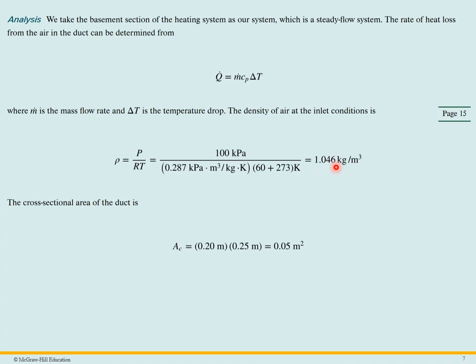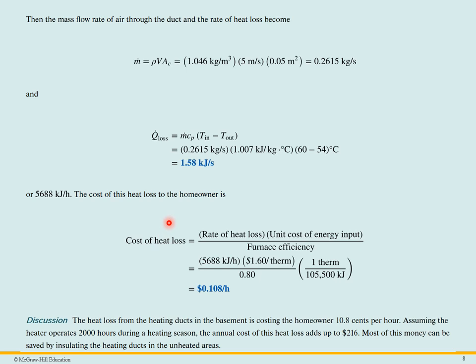The cross-sectional area of the duct, we know what that is. It's a rectangular duct. So finally, we can calculate the mass flow rate. It's the density times the velocity times the area. So we got the density from the previous slide. The velocity is given and the area we calculated. So we can find M dot. And then finally, we can find the heat loss as M dot C_P delta T.